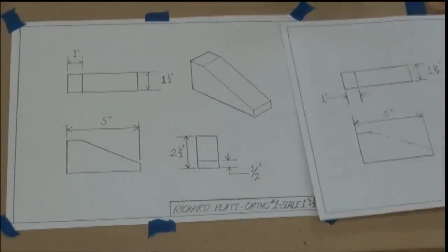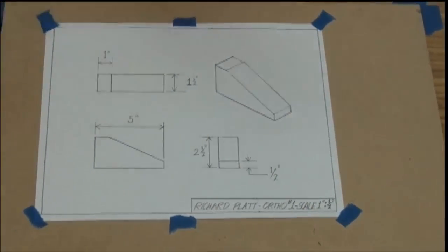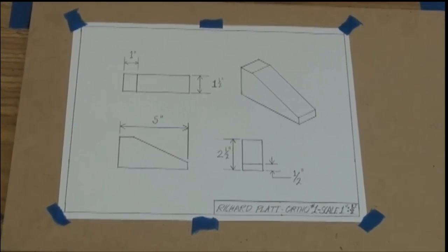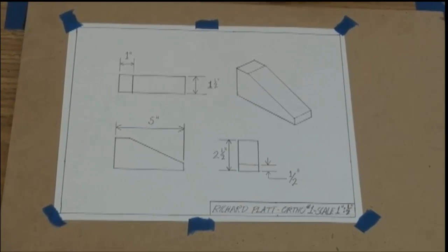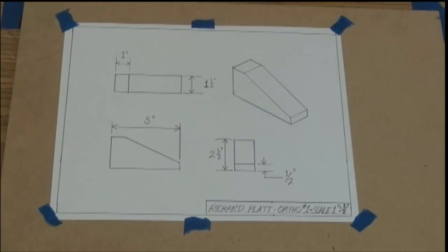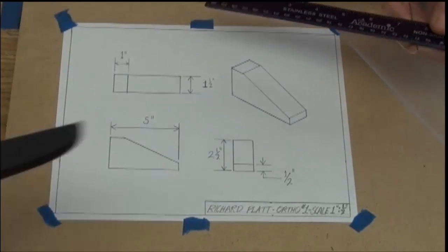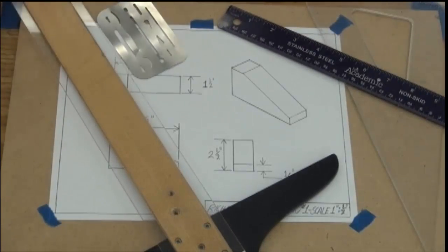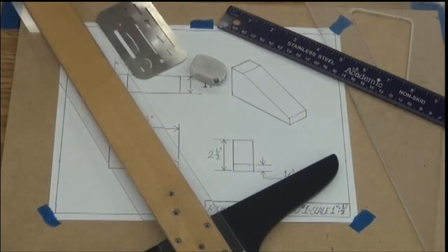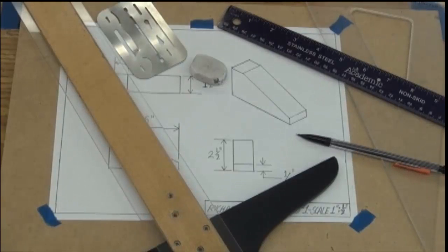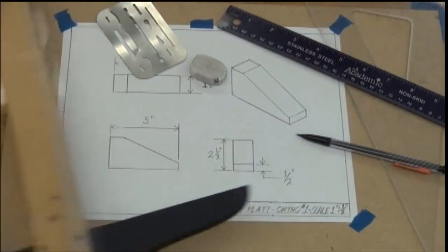but essentially we've got a very high-quality drawing that we can now feel confident that we can send out into the field and do something with. This is orthographic and isometric projection, again, with a 30-60-90, a scale, and a T-square, and some of the most basic drafting tools that anybody can get at their disposal. I appreciate your time, and I hope this benefits you greatly.